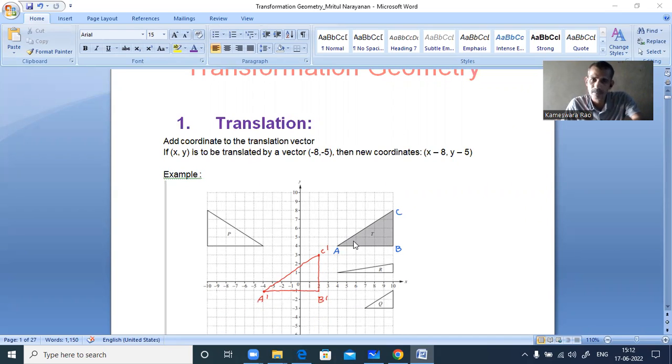This ABC is moved with a translation vector minus 8 comma minus 5 to A dash B dash C dash. Okay, how to find the coordinates of the image, that is A dash B dash C dash, we will see now.